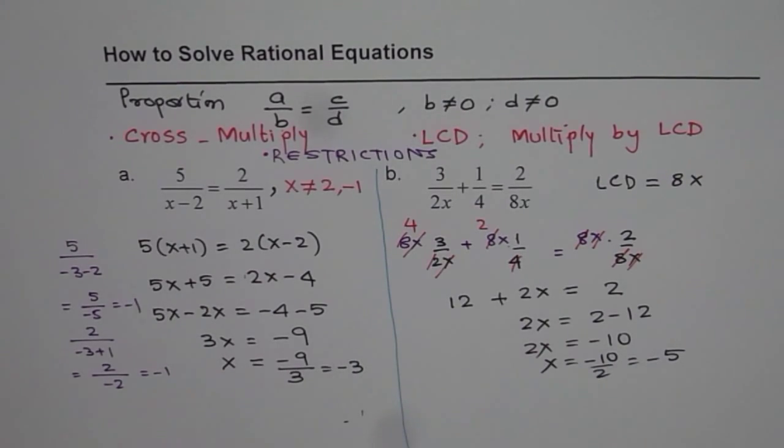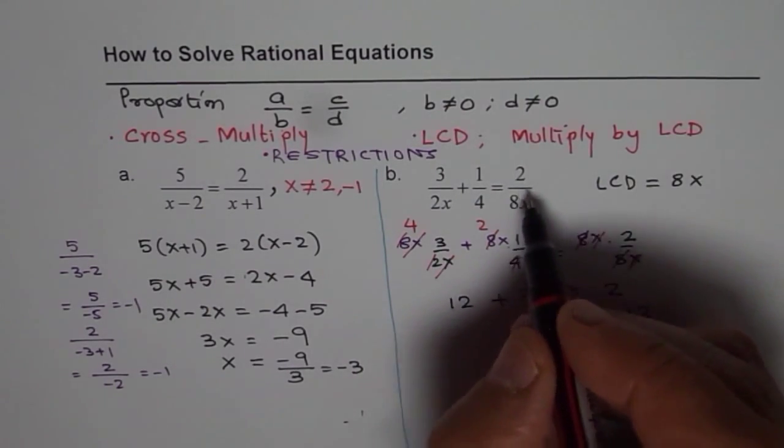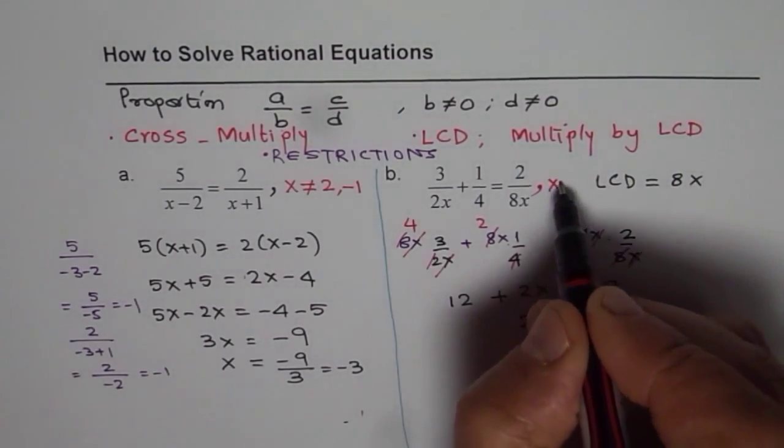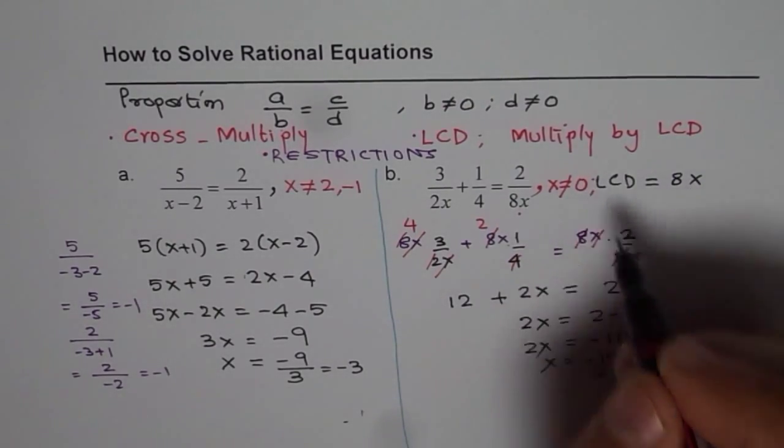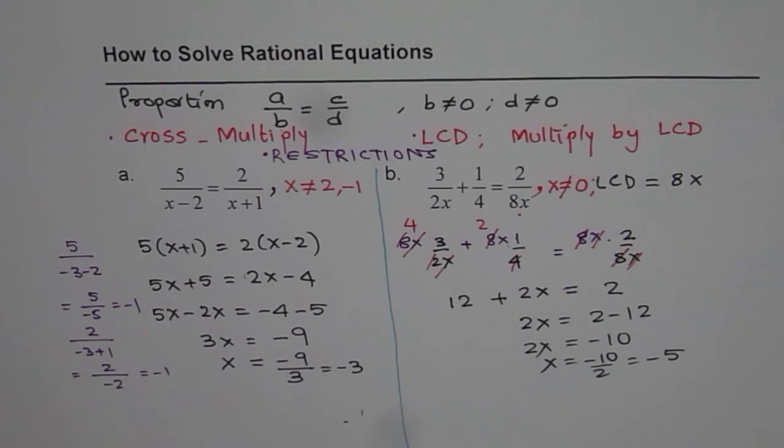What we forgot here is to write restrictions. So before you start, write x is not equal to 0 in this case, since 0 is going to make the denominator 0. So you get minus 5.